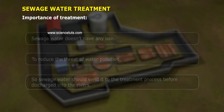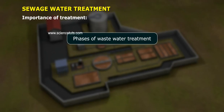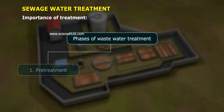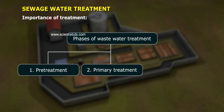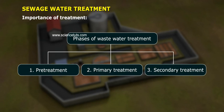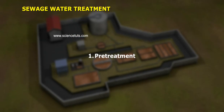Phases of Wastewater Treatment: 1. Pre-Treatment, 2. Primary Treatment, 3. Secondary Treatment.